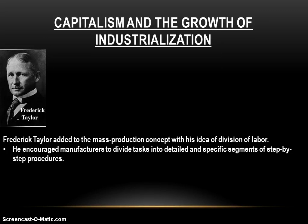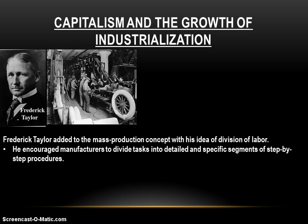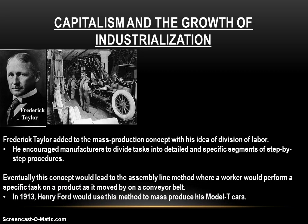Frederick Taylor was an efficiency specialist who called his methods scientific management. He tried to find ways to make production more efficient, and what he realized was that having one person produce one item at a time was not nearly as efficient as it ought to be. Instead, he encouraged manufacturers to divide tasks into detailed, specific segments of a step-by-step process. Rather than one person building one chair at a time with all the prefabricated parts, you have three or four people each do one step in the process. One person does one thing over and over again, and together everyone manages to produce that product.